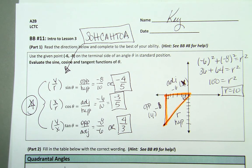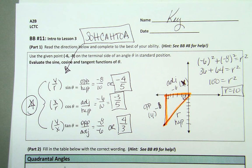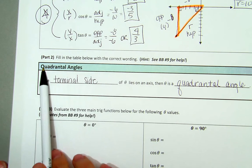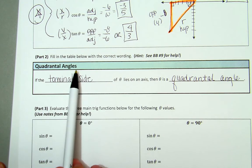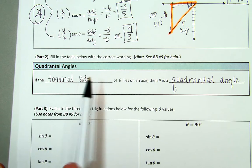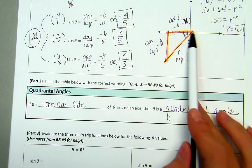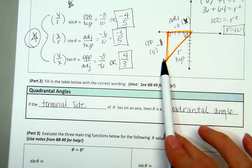We're building this unit circle, working from the easier angles toward the more detailed ones. Part two had us reviewing what a quadrantal angle is. A quadrantal angle is when the terminal side — the side that rotates around your coordinate plane, like a clock — lies on an axis. The initial side stays fixed on the x and y coordinate plane.